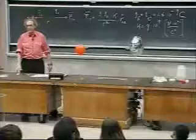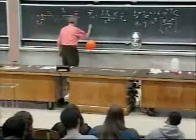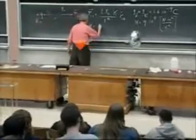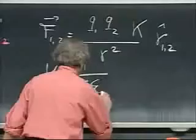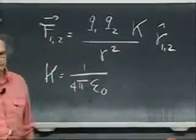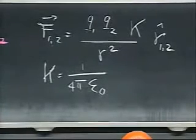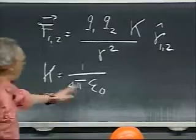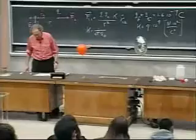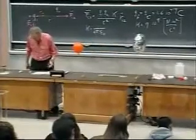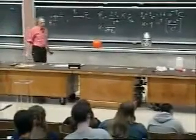For historical reasons, which may at times be a pain in the neck for you, we write for K, one divided by four pi epsilon zero. There is nothing magic about that. It's just a historical reason. And so one divided by four pi epsilon zero is nine times ten to the ninth. That's all that matters. This epsilon zero has a name. It's called the permittivity of free space, but you can forget about that, it's not important.